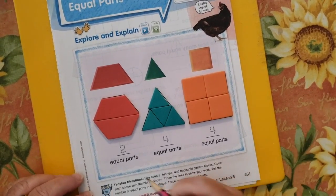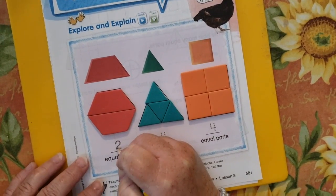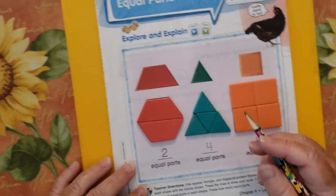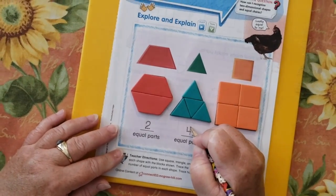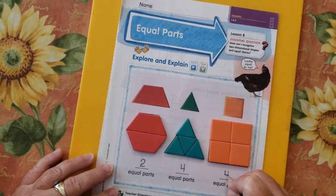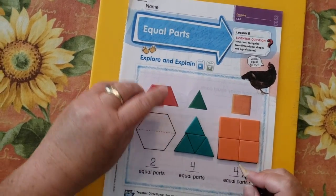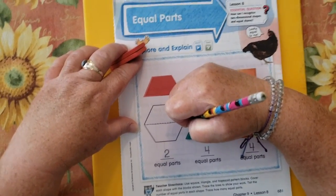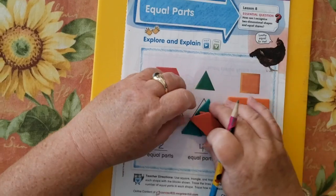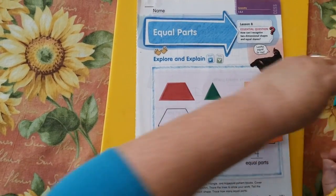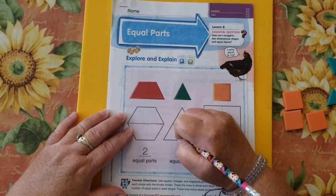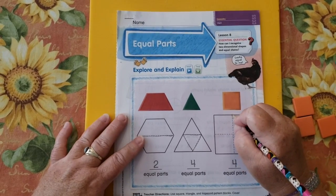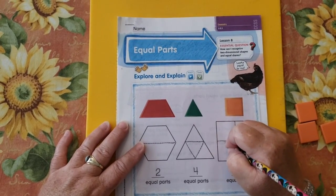And we're making a square of squares with four equal parts. Now we're going to trace the numbers and trace the line on your shape. Slowly. Okay, so all of these are examples of equal parts.